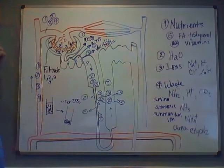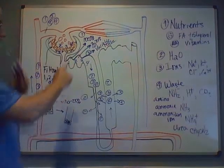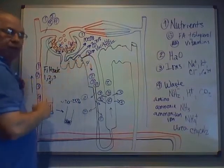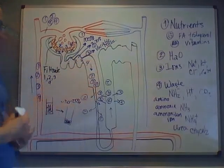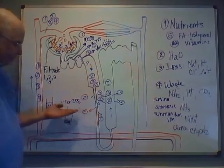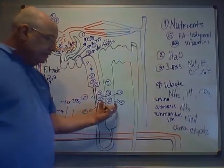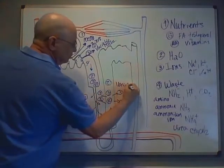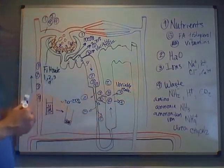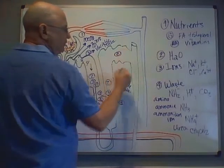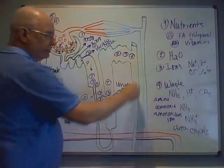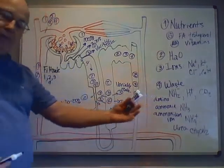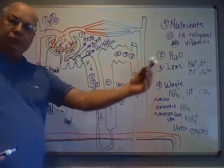Under normal conditions: 100% of nutrients are reabsorbed in the PCT; roughly 70–75% of water in the PCT; another 20–25% of water in the thin descending limb; and variable ion reabsorption in the thick ascending limb. By the time I reach the distal convoluted tubule, I have a little water, a little salt, but 100% of the waste. That waste passes through the collecting duct, minor calyx, major calyx, renal pelvis, ureter, bladder, urethra, and is excreted.